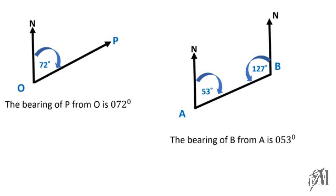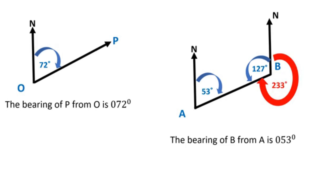Remember, bearings are always measured from north in a clockwise direction. The 127° we found is measured anti-clockwise, so the bearing is 360 − 127 = 233 degrees. Therefore, the bearing of A from B is 233 degrees.